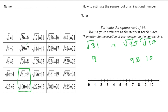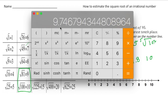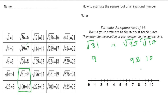Let's check that with the calculator. If I type in 95 and hit square root, we get 9.74, which is pretty close to my estimation of 9.8. Now that you understand how to estimate square roots of irrational numbers, pause the video and try the 'your turn' problems on your own.